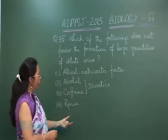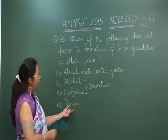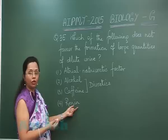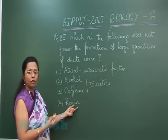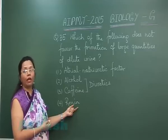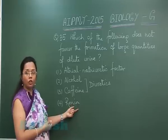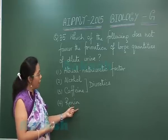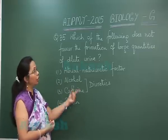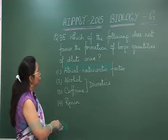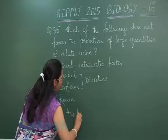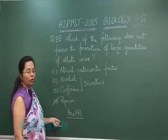Renin stimulates the conversion of angiotensinogen to angiotensin 1, which then gets converted to angiotensin 2 and leads to the release of aldosterone from the adrenal cortex, which is responsible for sodium and water absorption. So if sodium and water are absorbed due to this effect, the urine won't be dilute. So the best answer is the fourth option. Now let's move on to question number 36.